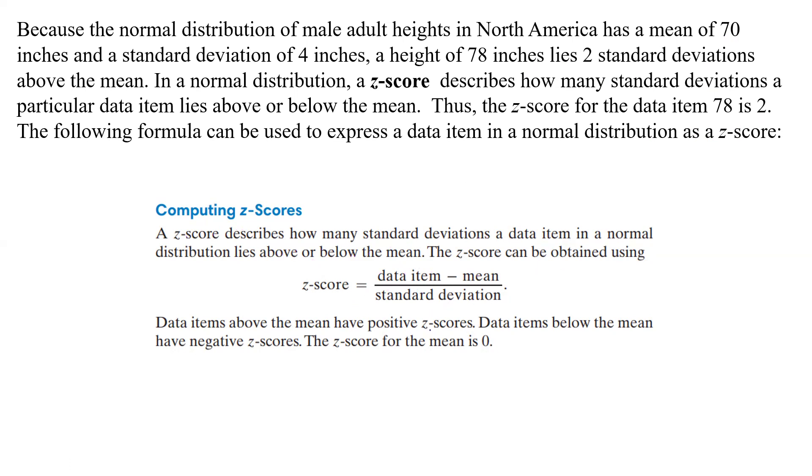Data items above the mean have positive z-scores, data items below the mean have negative z-scores, and the z-score for the mean itself is 0. So if we want to find the z-score for the mean, that's just going to be 0.